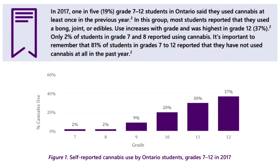Some statistics to share: back in 2017, one in five grade 7 to 12 students in Ontario said they used cannabis at least once in the previous year. In this group, most students reported using a bong, joint, edible, or other methods to consume it. Use increased with grade, with the highest occurring by grade 12 — that experimentation stage at grade 12 becomes very abundant.